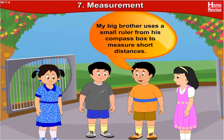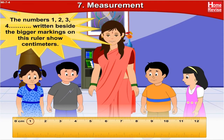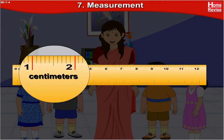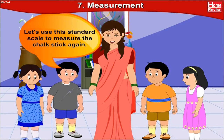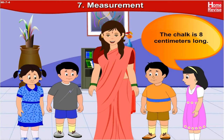My big brother uses a small ruler from his compass box to measure short distances. Now that you've spoken about a ruler, let me show you one. The numbers 1, 2, 3, 4 and so on, written beside the bigger markings on this ruler, show centimeters. Between two big markings, there are small markings — they show units of length smaller than centimeters. Let's use this standard scale to measure the chalk stick again. The chalk is 8 centimeters long.